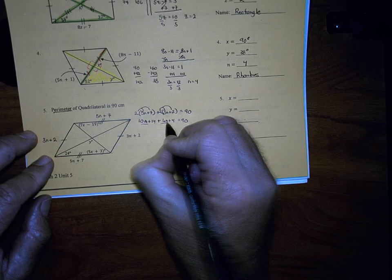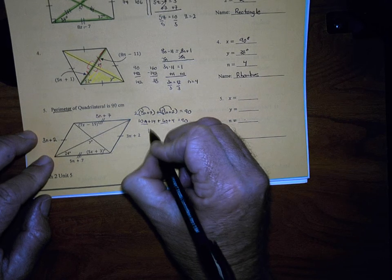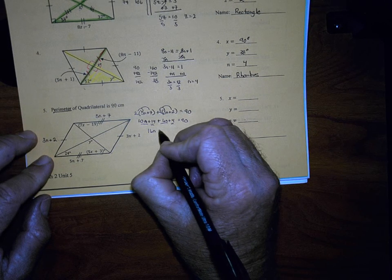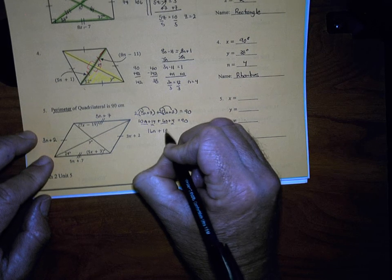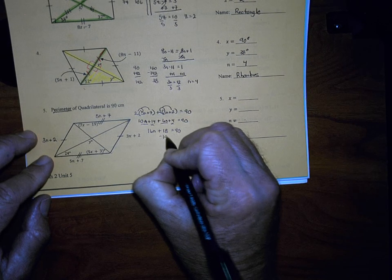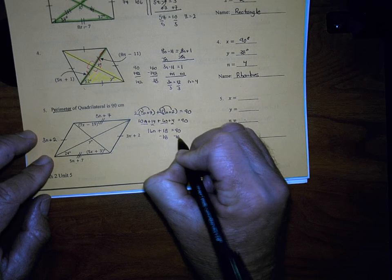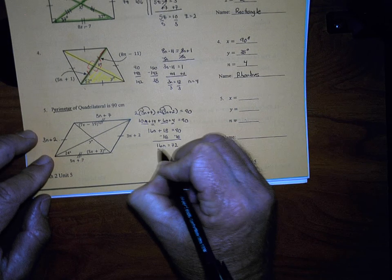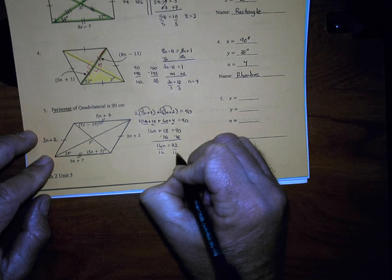Combine the 10N and the 6N to make 16N. Combine the positive 14 with the positive 4, that makes plus 18. That would be equal to 90. Subtract 18 from both sides. 16N would be equal to 72, divide both sides by 16.